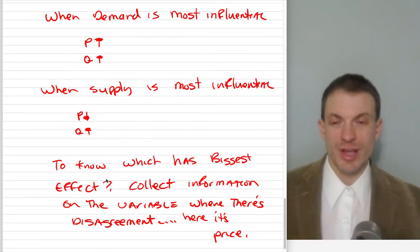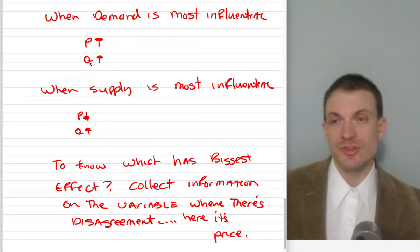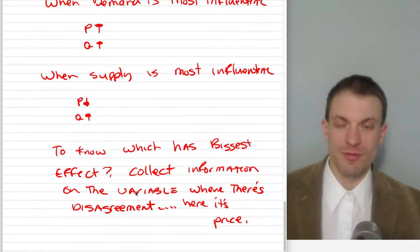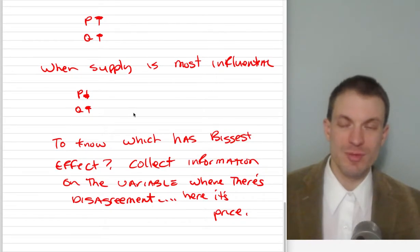So how do we know which has the biggest effect? You'd collect information on the variable where there's disagreement. In this case, that's price. It could have been quantity where there's disagreement, depending on the combination and directions of shifts. So here we'd want to collect information on the variable where there's disagreement - in this case, price.